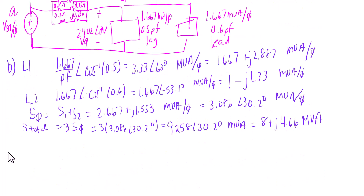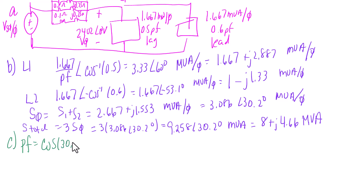For part C, we find the power factor for the combined load. That is the cosine of 30.2 degrees. Since the angle is positive, it is lagging, giving a power factor of 0.8641 lagging.